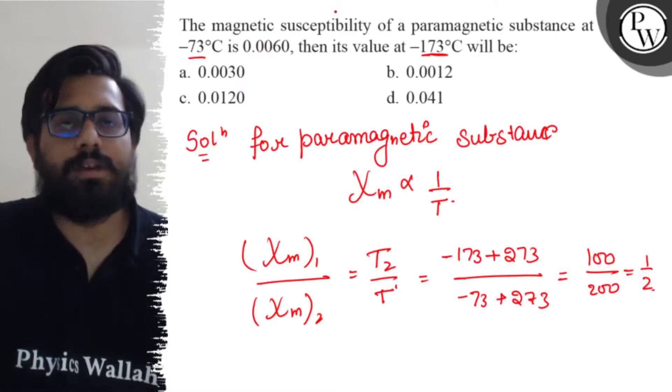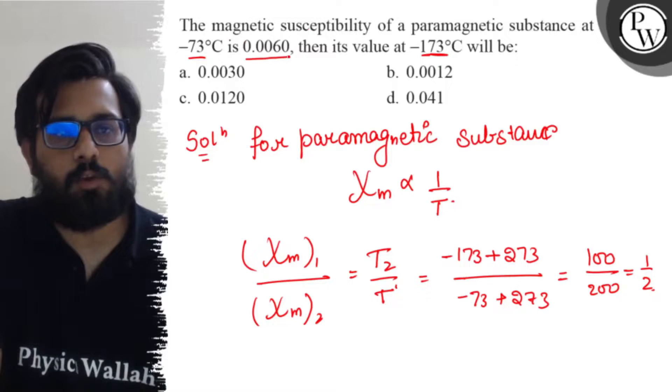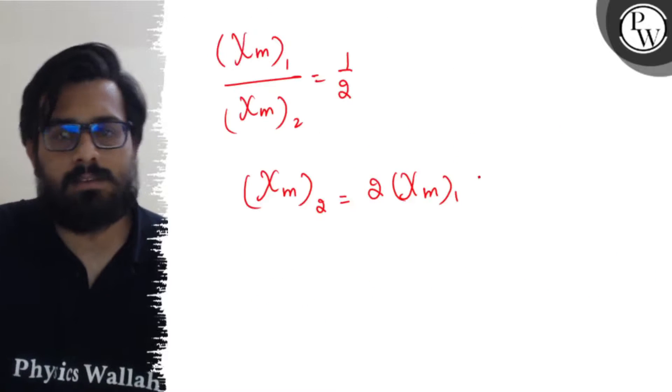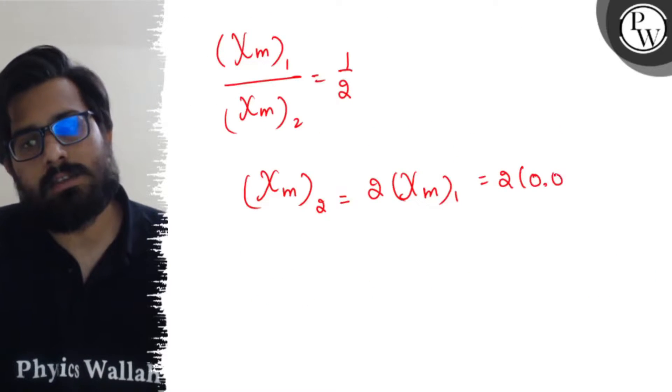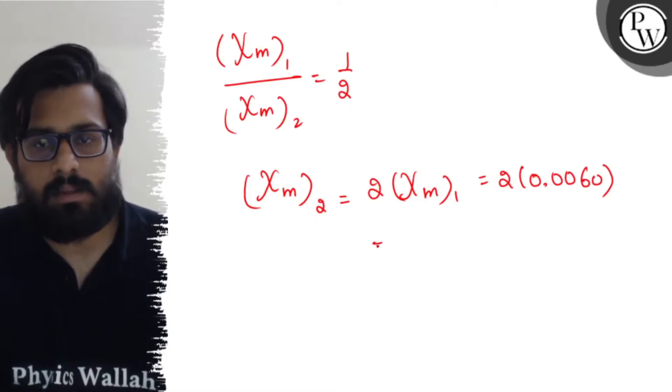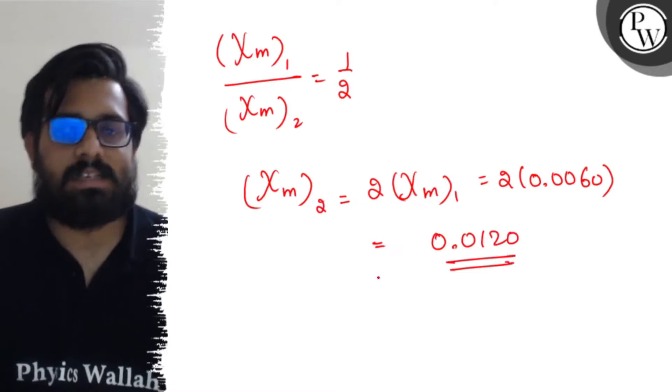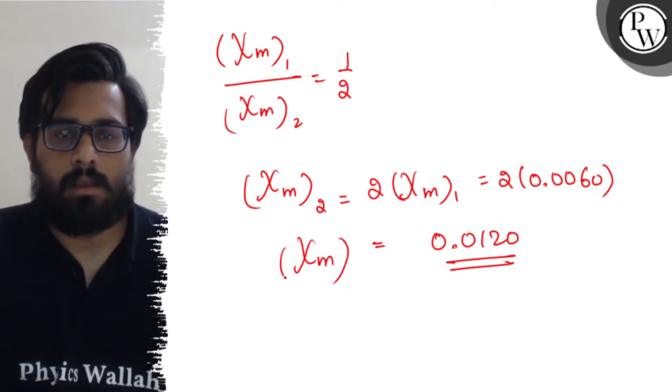In your first case, the susceptibility is given as 0.0060. Putting the values, 2 times 0.0060, and solving this, you get a value of 0.0120. This is the value of susceptibility.